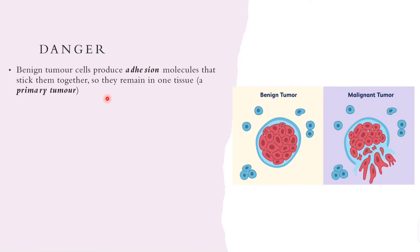Regarding danger: benign tumors produce adhesion molecules. Adhesion is the attraction between unlike substances, so these molecules allow tumor cells to stick together and clump, remaining in one tissue as a primary tumor. Because all the cells and molecules stick together, the benign tumor remains in one tissue — none of the cells can separate and move elsewhere.